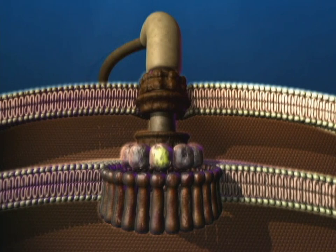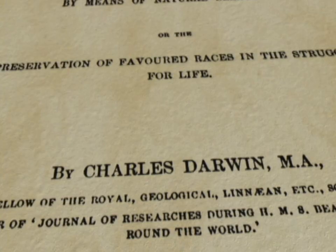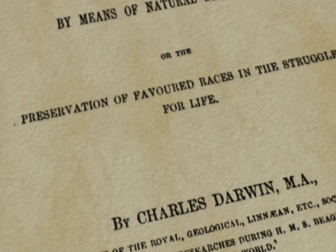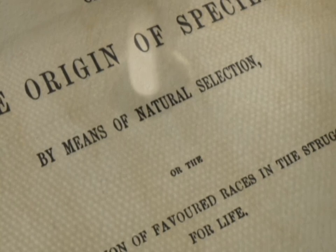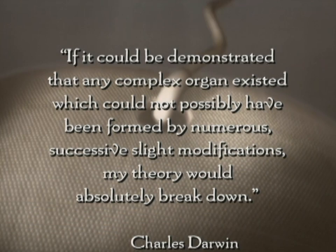We know a lot about the bacterial flagellum — we still have a lot to learn, but we know a lot about it — and there's no explanation for how this complex molecular machine was ever produced by a Darwinian mechanism. One hundred and fifty years ago, scientists did not know about irreducibly complex molecular machines, yet Charles Darwin himself anticipated the difficulty that systems such as these could pose to his theory.